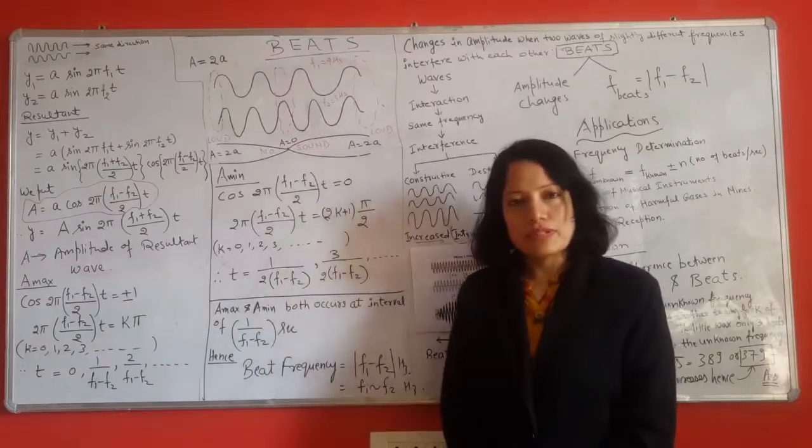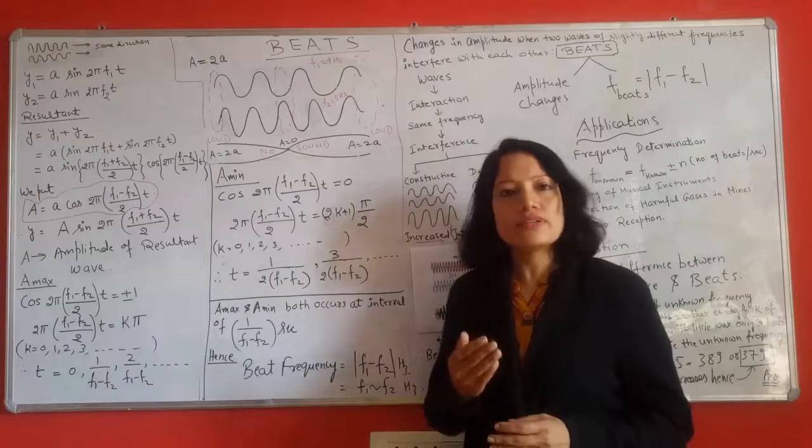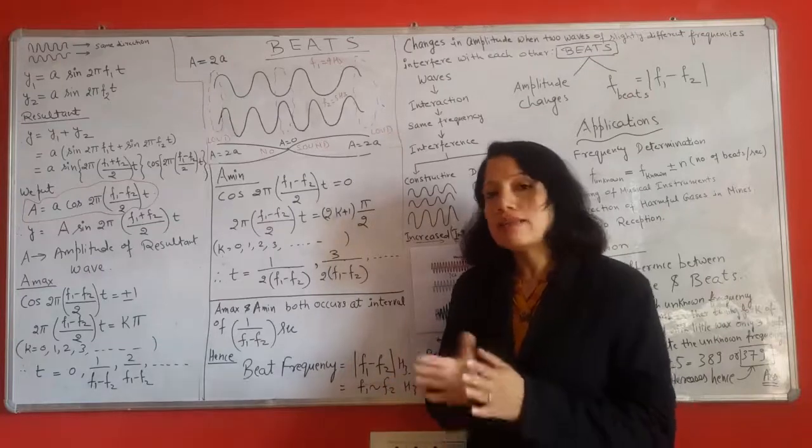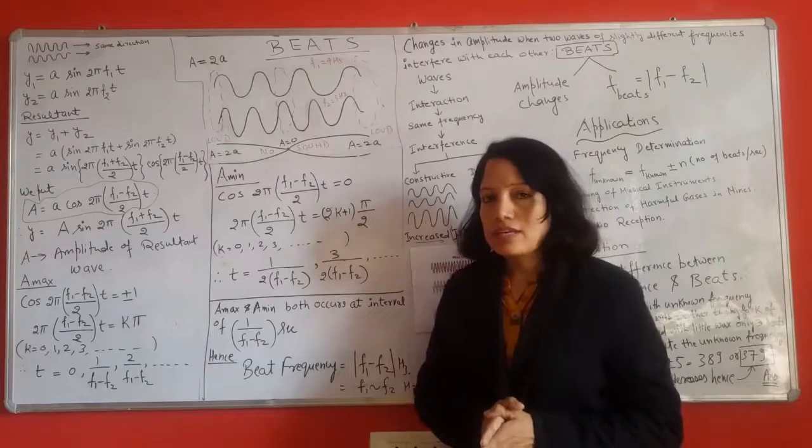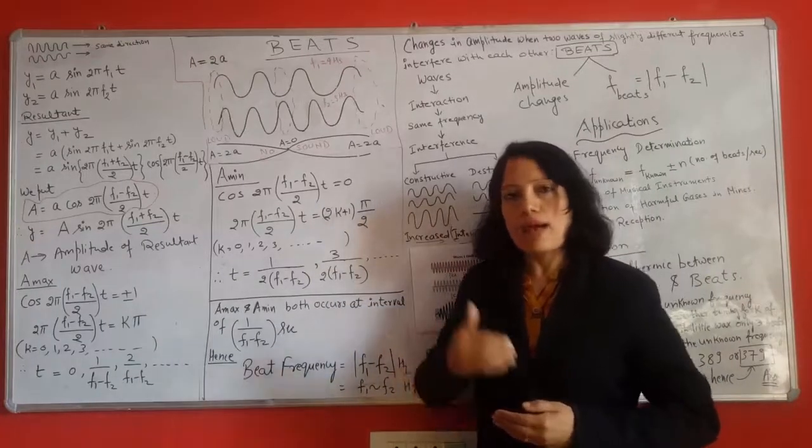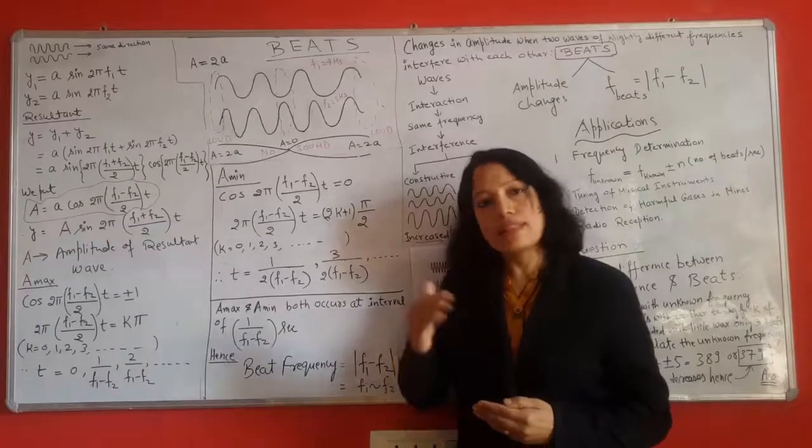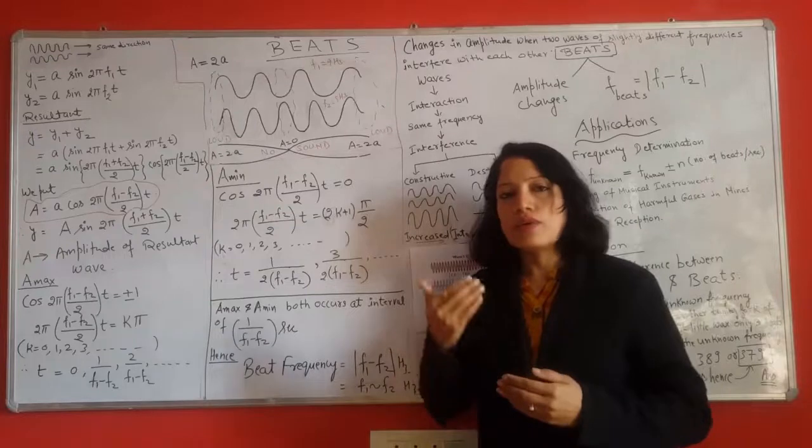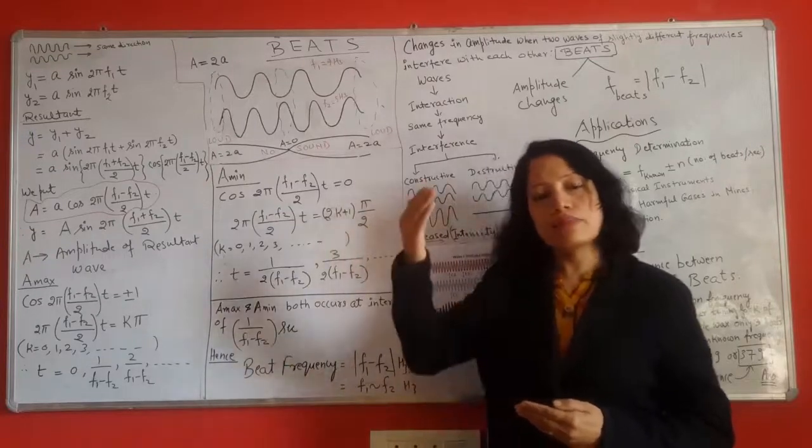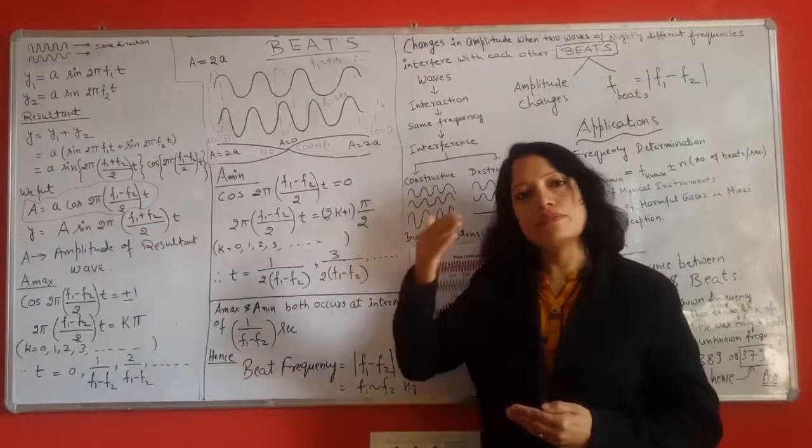How beats are produced? When two sound waves of same amplitude but slightly different frequencies travel in the same direction and they interfere, then beats are produced. In the resultant wave, there is a variation in amplitude. Amplitude changes from a maximum value to a minimum value and this variation in amplitude is heard as variation in loudness of the resultant sound. It goes to a maximum to a minimum, then a maximum to a minimum and it keeps on varying.